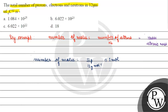If we want to find the number of atoms, what will happen? Number of atoms is basically equal to Avogadro's number multiplied by number of moles, which is 6.022 × 10²³ mol⁻¹.